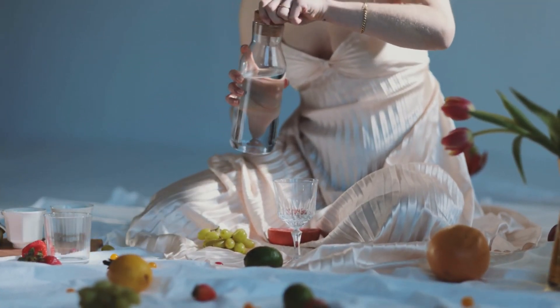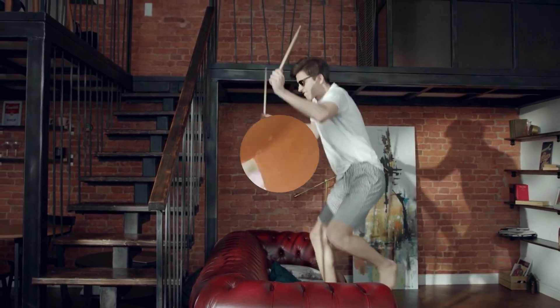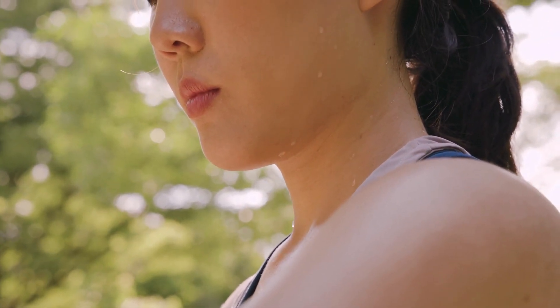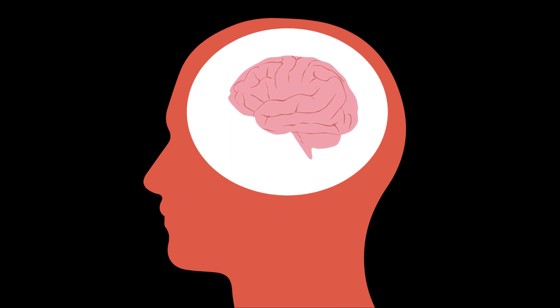But here's where things get really crazy. Just 90 minutes of sweating can shrink your brain temporarily as much as a whole year of aging.